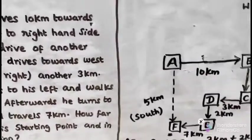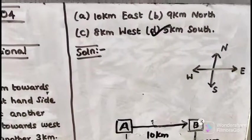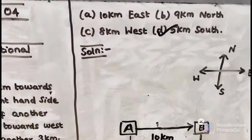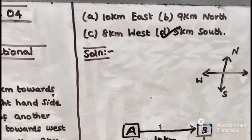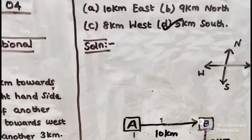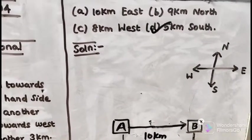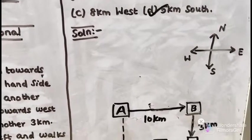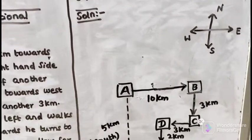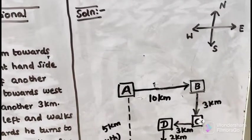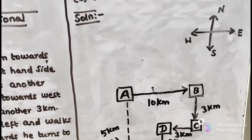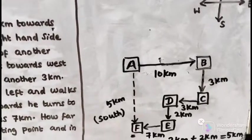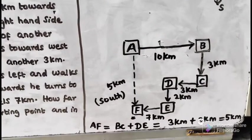The options are: A is 10km East, B is 9km North, C is 8km West, D is 5km South. First, the basic rule for directions: draw North, East, South, West.